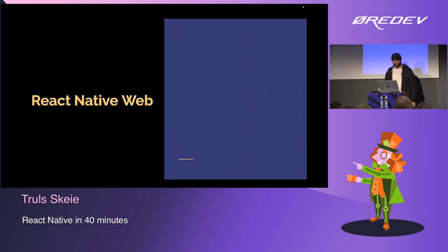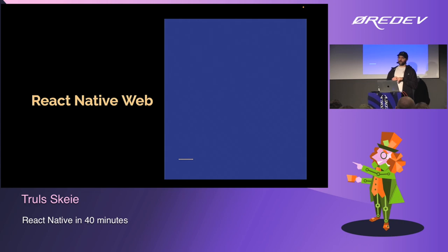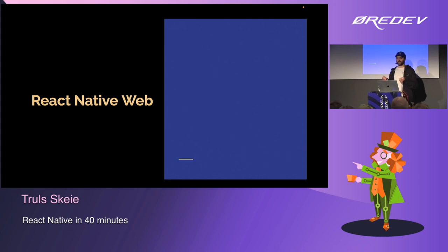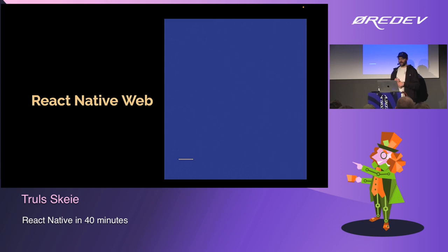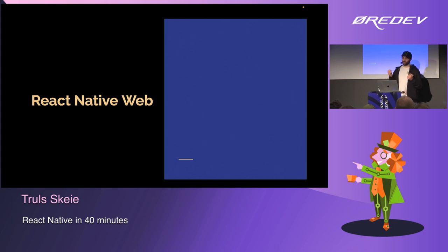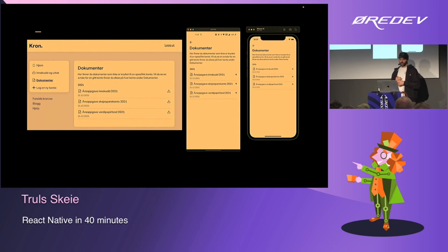I'm going to finish off by talking about React Native Web. It was started in 2017 by a guy called Niklas who works at Twitter. He looked into React Native, talked to the Meta developers about the problems they were solving, and saw that a lot of the same problems existed at Twitter. So he wanted to port React Native to the web. As far as I know today, Twitter.com and Uber.com run on React Native Web.